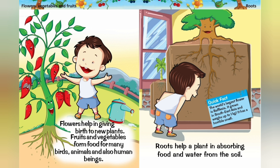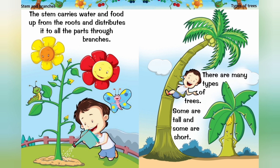Roots: Roots help a plant in absorbing food and water from the soil. Stem and Branches: The stem carries water and food up from the roots and distributes it to all the parts through branches.